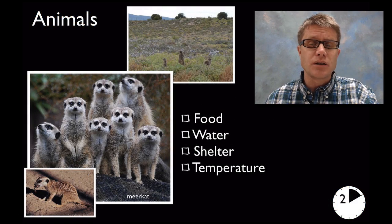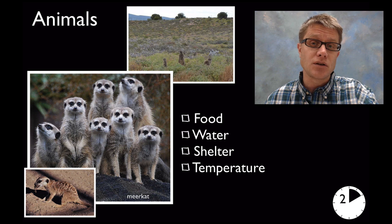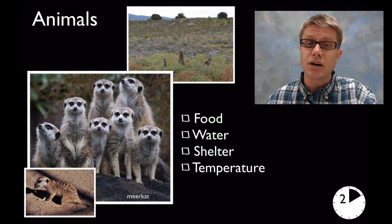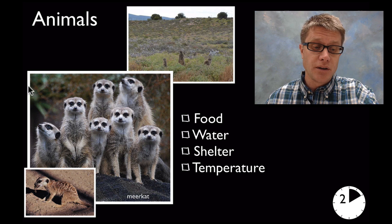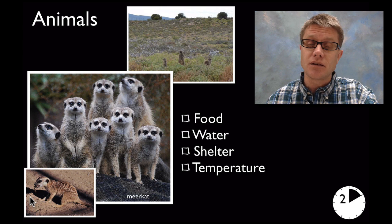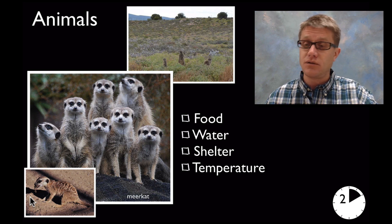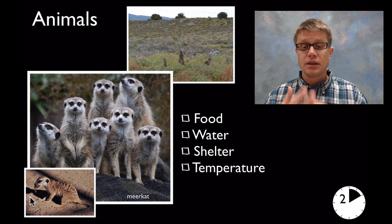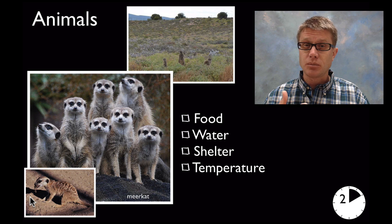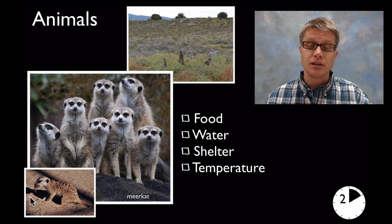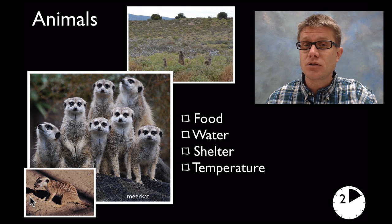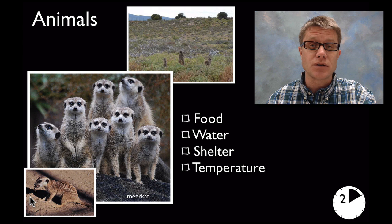We start at the lower elementary grades by talking about animals and plants. What do animals like this meerkat require to survive? Well, they feed on insects — pretty much anything they can find. So they need food, water, shelter — a place to live — they're going to live underground. And they need a suitable temperature, not too hot and not too cold.